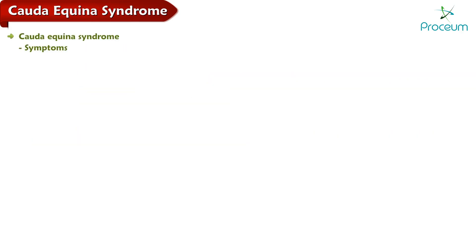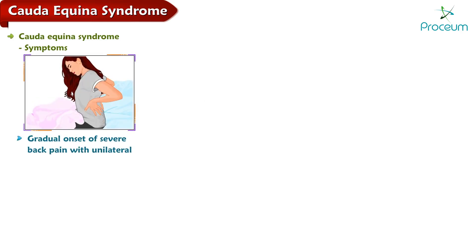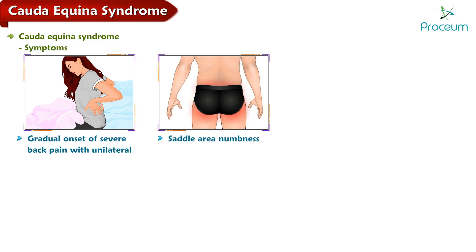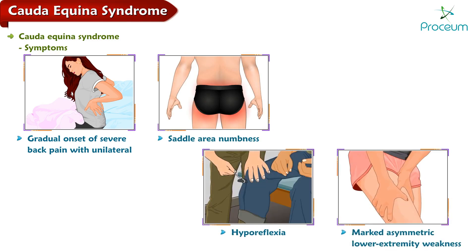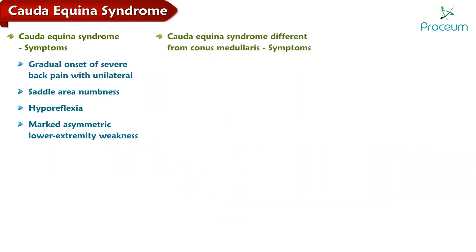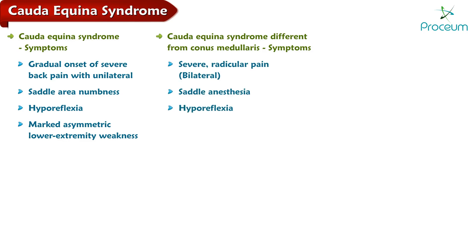Patients with cauda equina syndrome usually present with gradual onset of severe back pain with unilateral radiculopathy, saddle area numbness, hyperreflexia, and marked asymmetric lower extremity weakness. It differs from conus medullaris syndrome in that CES patients tend to present with severe bilateral radicular pain, saddle anesthesia, hyporeflexia, asymmetric motor weakness, and late onset bowel and bladder dysfunction.